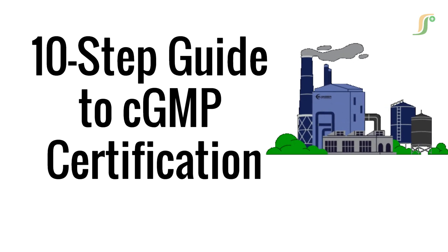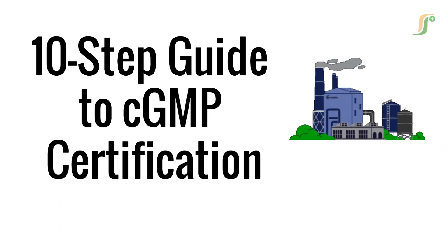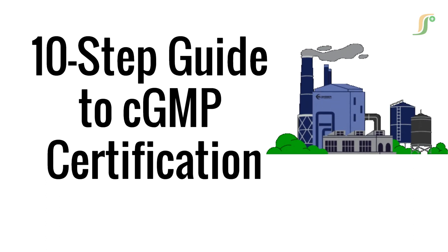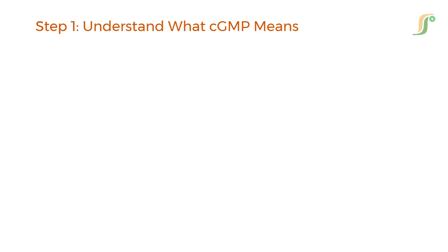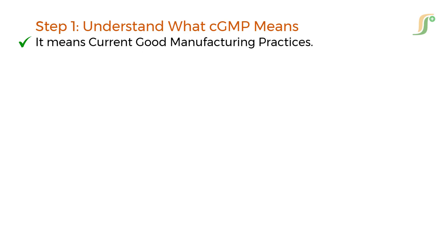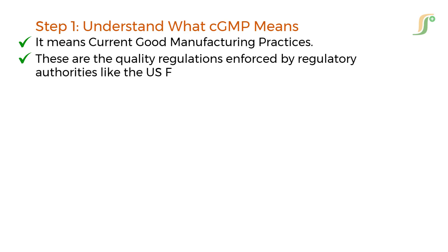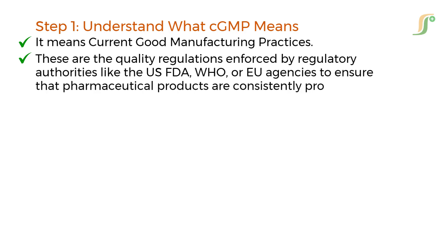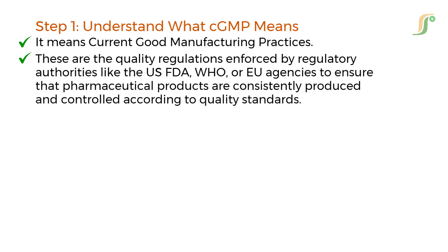So grab your notebook, let's get started. Before we begin, it's essential to understand what CGMP stands for. It means Current Good Manufacturing Practice — these are the quality regulations enforced by regulatory authorities like the US FDA, WHO, or EU agencies to ensure that pharmaceutical products are consistently produced and controlled according to quality standards.